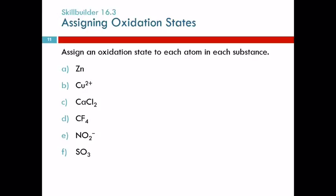Assign oxidation states. Here we have zinc all by itself. It's an element. What's the oxidation state? Zero. Element, oxidation state is zero. Here we have a monatomic ion. It's going to be plus two. The oxidation state will be the same as the charge.